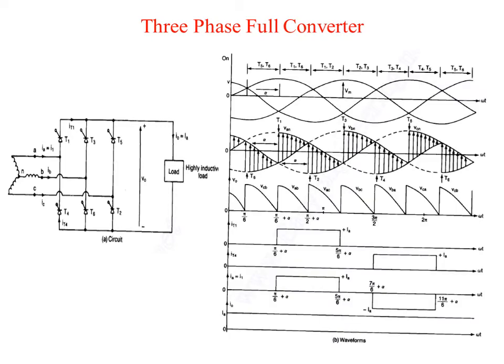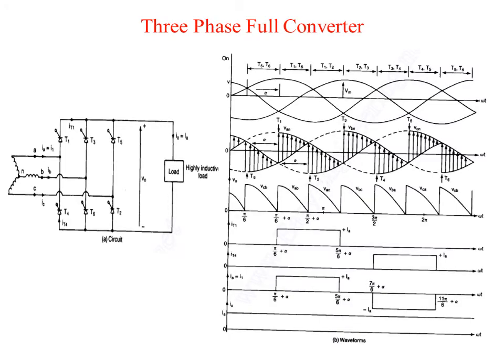Figure A shows the circuit diagram of a full wave converter for highly inductive load. The thyristors are fired at intervals of pi by 3. At omega t equal to pi by 6 plus alpha, as shown in Figure B waveform, thyristor T6 is already conducting and thyristor T1 is turned on.